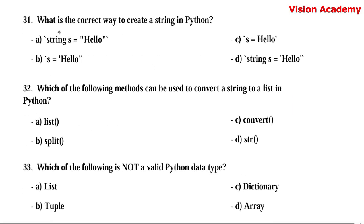Question number 31. What is the correct way to create a string in Python? Option A: string s = "hello". Option B: s = "hello". Option C: s = hello. Option D: string s = hello. Here, option B — s = "hello" — is the right answer.